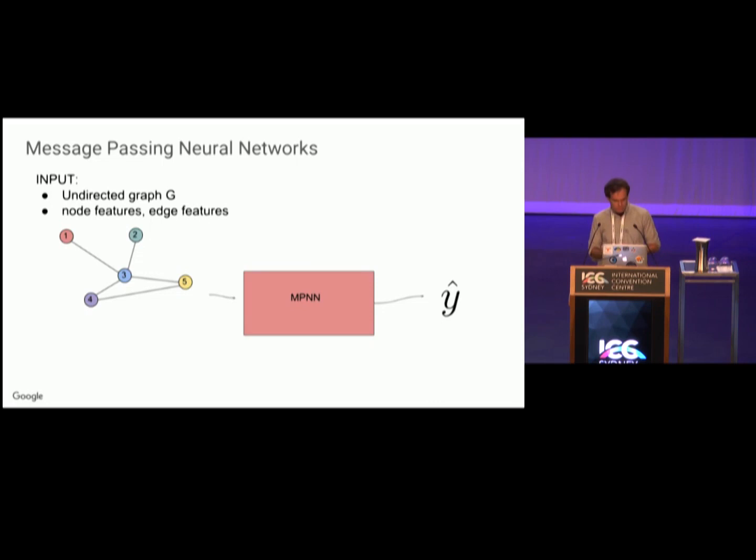So what is a message-passing neural network? The input is an undirected graph G. You have node features and edge features, which in general are vector-valued. The output, at least in our setting, is a graph-level target. Again, the important property of these models is this output is invariant to the order of vertices. Here I just have the same graph, and all I've done is relabel the vertices, and the message-passing neural network will produce the same output for each graph.